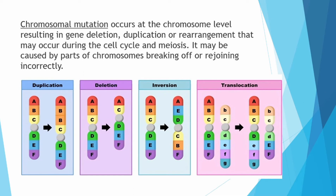Chromosomal mutation occurs at the chromosome level, resulting in gene deletion, duplication, or rearrangement that may occur during the cell cycle and meiosis. It may be caused by parts of chromosomes breaking off or rejoining incorrectly. We have duplications — some genes are duplicated. Deletions — there are genes that are deleted. Inversion — some genes are inverted. And translocation — some genes are translocated.